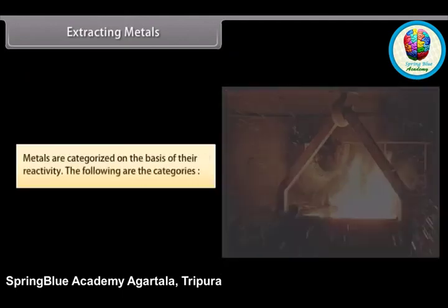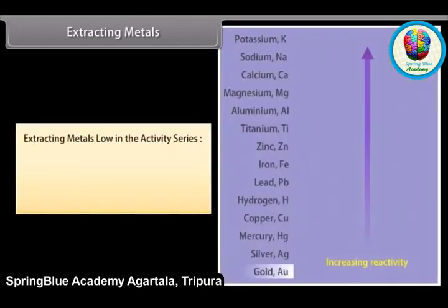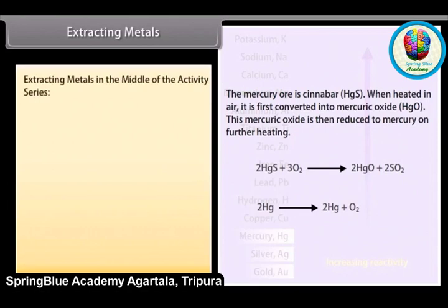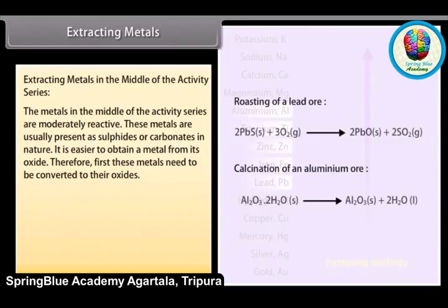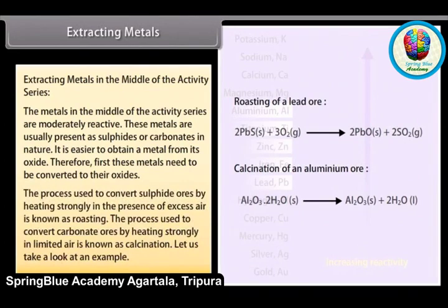Extracting metals. After metals are separated from their ores, they are classified based on their reactivity. Metals low in the activity series are very unreactive — the oxides of these metals are reduced to metals by heating alone. Metals in the middle of the activity series are moderately reactive and are usually present as sulphides or carbonates in nature. Since it is easier to obtain a metal from its oxide, these metals are first converted to their oxides. The process of heating sulphide ores strongly in excess air is known as roasting, and heating carbonate ores in limited air is known as calcination.